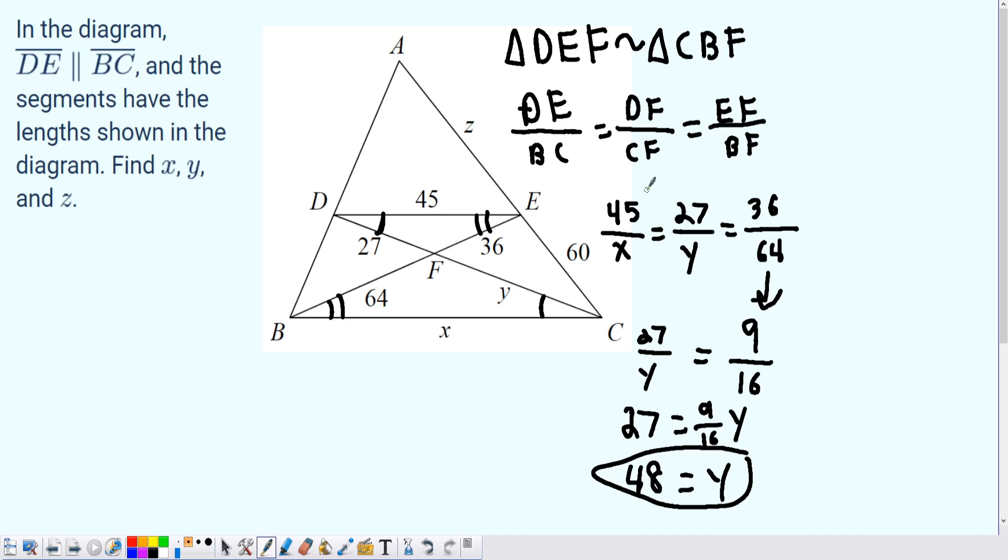Okay, now let's try for x. So we have 45 over x equals 9 over 16. I'm going to multiply x on both sides to get 45 equals 9/16 x. Then we can simplify that even further. If we notice, 45 divided by 9 would get us 5.